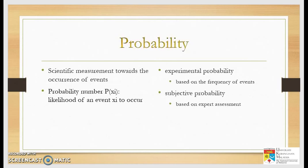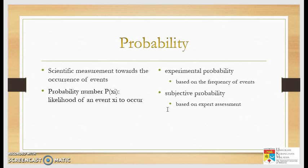Probability is a scientific measurement towards the occurrence or frequency of events. We say probability of X — the likelihood of an event X to occur — usually based on experiment or observation. Subjective probability is based on expert assessment; for example, an expert might say 80% confidence, or 80% certainty, before reaching a conclusion.